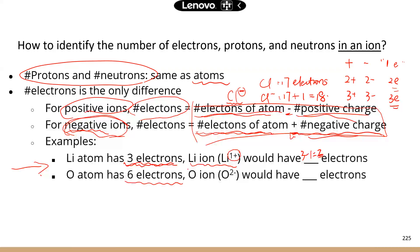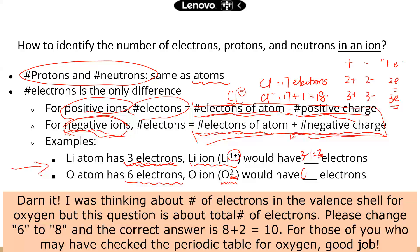Oxygen has six electrons, but the oxygen atom can become an oxygen ion which carries a two-minus charge. That means the oxygen atom gains two electrons. So that's going to be six plus two — the original six electrons plus the two electrons gained — for a total of eight electrons. This is how you determine how many electrons, protons, and neutrons are in an ion.